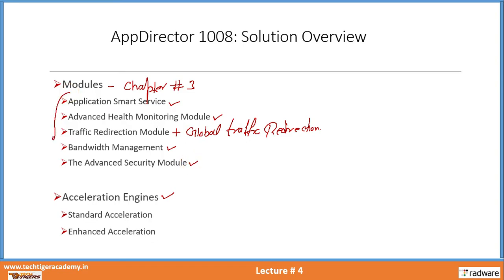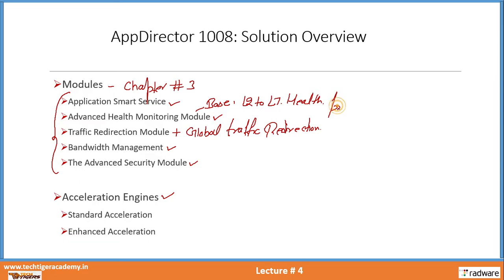These are the modules present in Radware AppDirector. Each of these modules has exclusive functionality. Sometimes two modules work together to achieve a purpose — for example, the advanced health monitoring module and the traffic redirection module work together. The health monitoring module is the base of all modules because it checks the health of a back-end server. It can provide health checks from layer 2 up to layer 7, and it has predefined health checks as well as the ability to create custom ones.